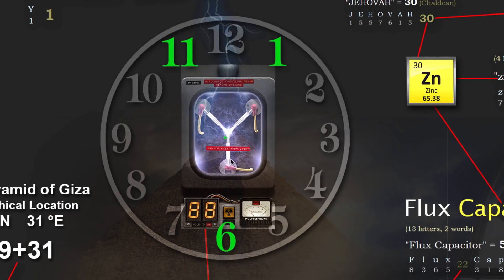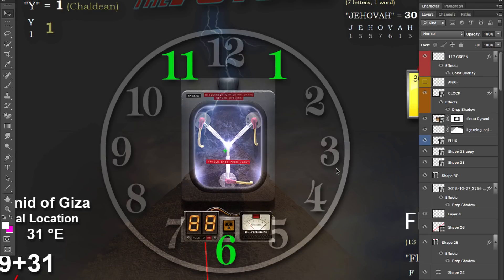117: the flux capacitor is pointing to the 11, the 1, and the 6. Follow the clock — 1 plus 6 in numerology is 7 — giving 117. Time travel. Time travel.